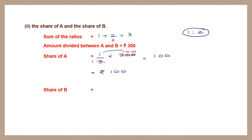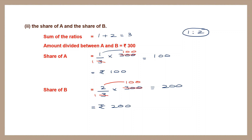Share of B: take the second ratio number 2, so 2/3 into 300. Cancel 3 and 300: 3 into 100 is 300. Then 2 into 100 is 200. So B gets 200 rupees. A gets 100 rupees and B gets 200 rupees.